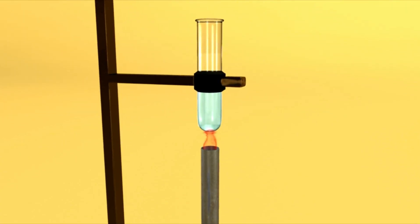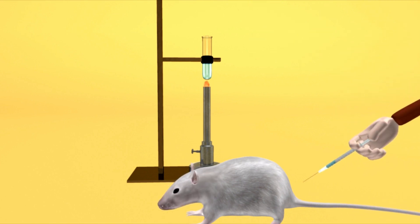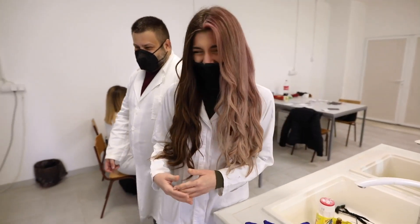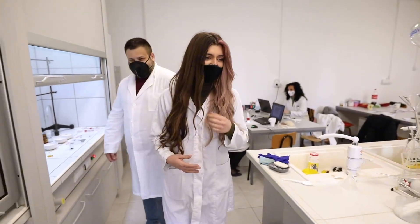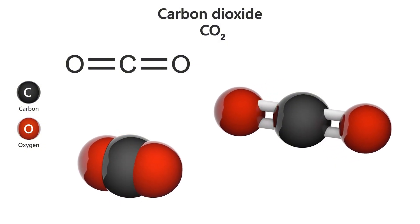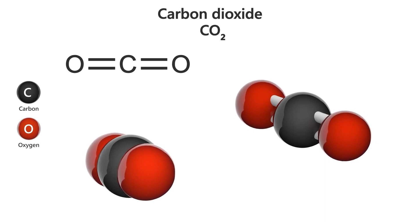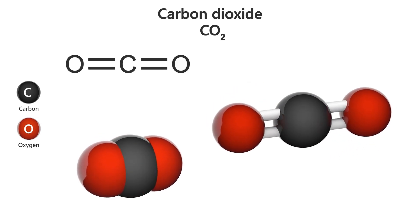Fortunately, K2-18b's host star, K2-18, is a red dwarf that emits less heat than our Sun. This is crucial because it means that despite the planet's proximity to its star, its surface isn't completely scorched. In fact, this lower luminosity could turn out to be a benefit, as it has allowed scientists to detect vaporized water in the planet's atmosphere. This discovery adds to the growing evidence that K2-18b might just have the conditions necessary to support life.